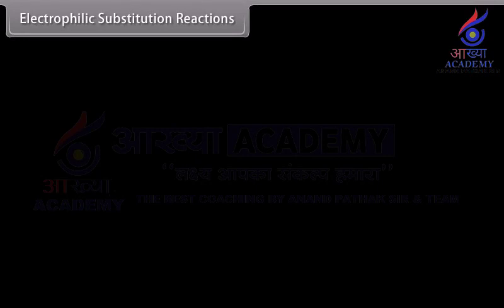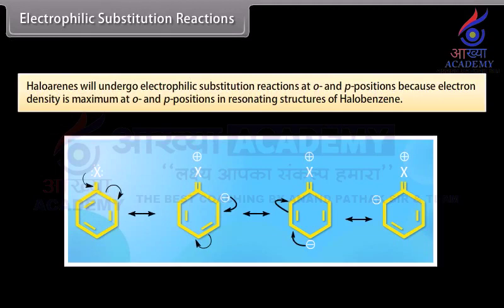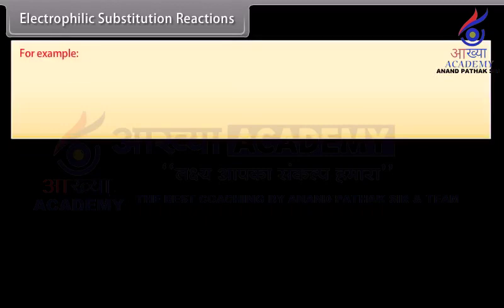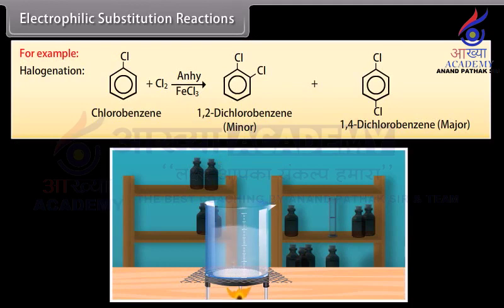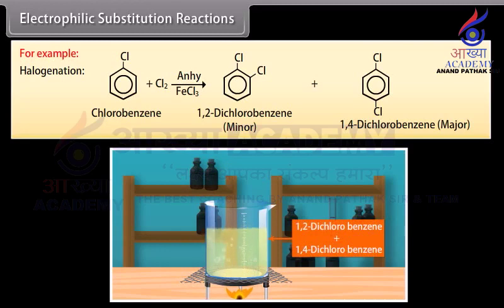Electrophilic substitution reactions: haloarenes undergo electrophilic substitution reactions at ortho- and para-positions because electron density is maximum at ortho- and para-positions in the resonating structures of halobenzene. For example, halogenation: when chlorobenzene is mixed with chlorine and ferric chloride is added, it reacts to give 1,2-dichlorobenzene as the minor product and 1,4-dichlorobenzene as the major product.